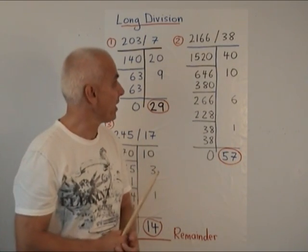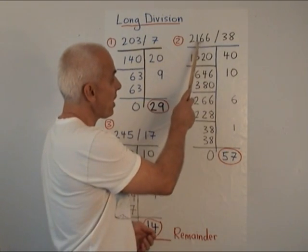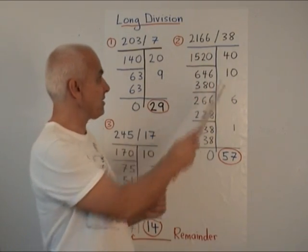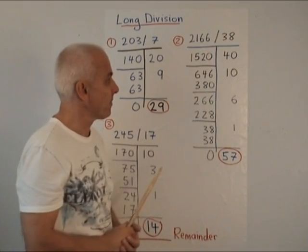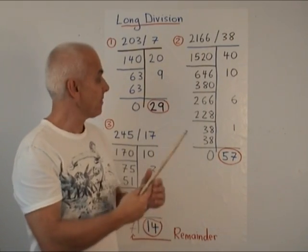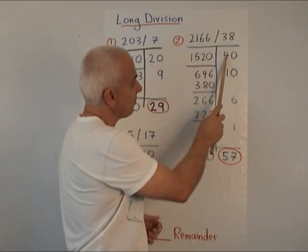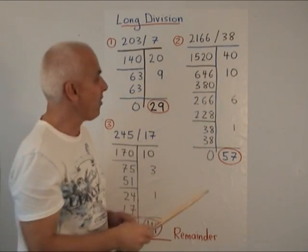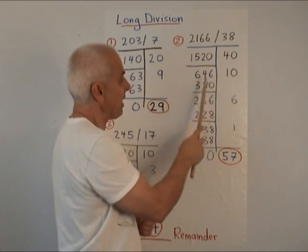Let's do a slightly more complicated example. 2,166 divided by 38. So we want to know how many 38s fit inside here. We make an underestimate. We guess perhaps 40. Because 4 times 3 is 12 and there will be a couple of zeros and the 8 will make it a little bit bigger.